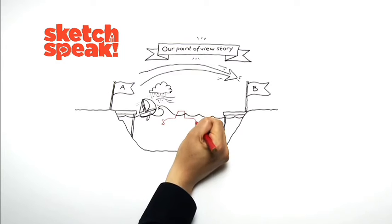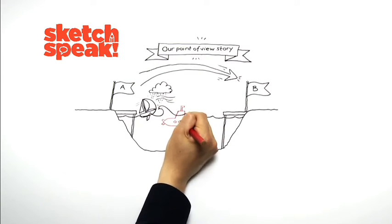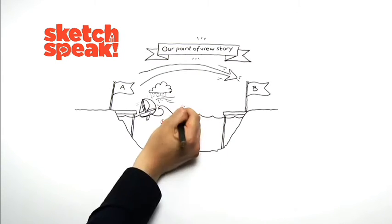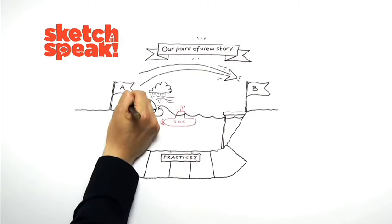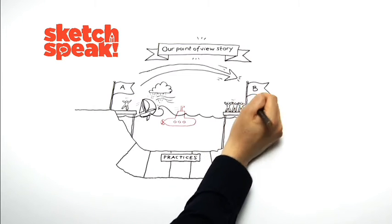SketchSpeak is a visual communication system that helps us to cut through complexity and build understanding quicker. Our five practices can create clarity, alignment, and engagement for a single individual or a whole organisation.